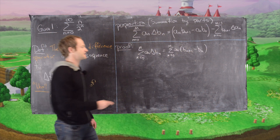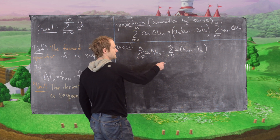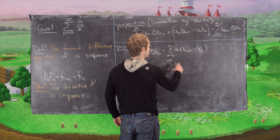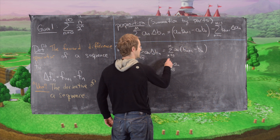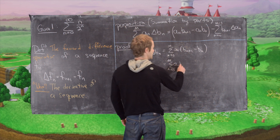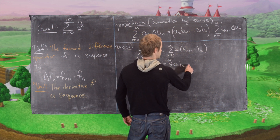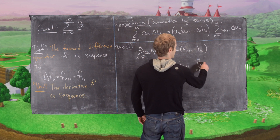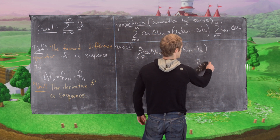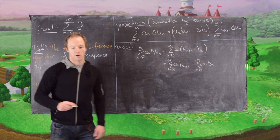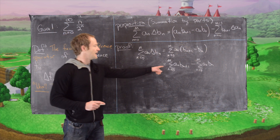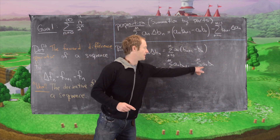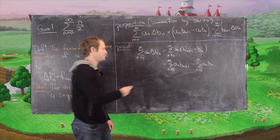We can split this into two sums: the sum n equals 0 to m of aₙ bₙ₊₁, minus the sum n equals 0 to m of aₙ bₙ. Now what we want to do is pull the last term out of the first sum and the first term out of the second sum.